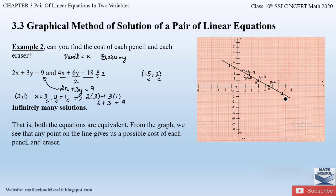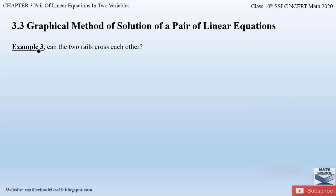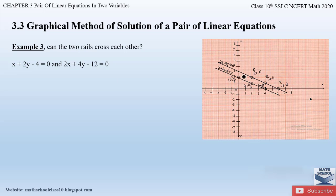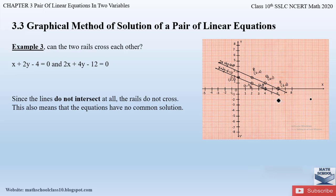The next type is Example 3, where we had to find whether two rails cross each other. The equations were x plus 2y minus 4 equals 0 and 2x plus 4y minus 12 equals 0. When plotted, the two lines were parallel to each other — they did not coincide at any point, and even if extended they do not meet. Since the lines do not intersect or coincide, there is no common point, and hence no solution.